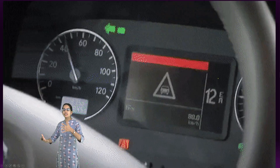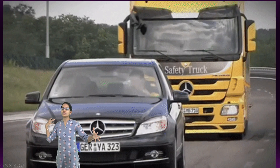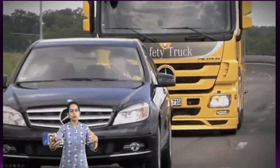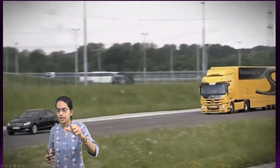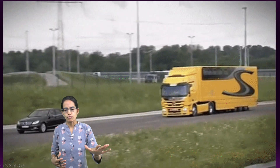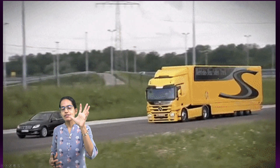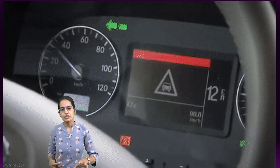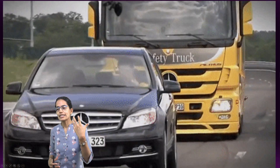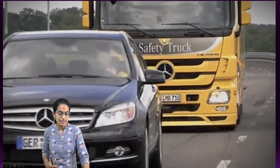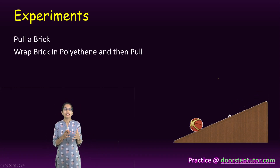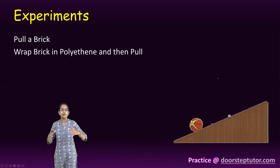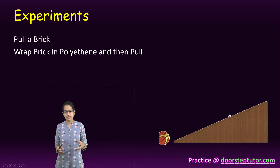We have a video here demonstrating how a speeding vehicle comes in, puts on the brake, and stops. When the vehicle is braking and stopping, what it is creating is actually friction.